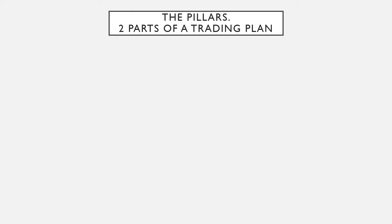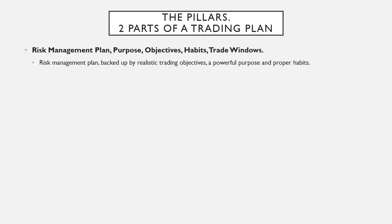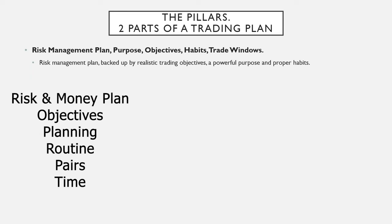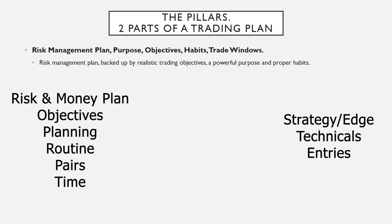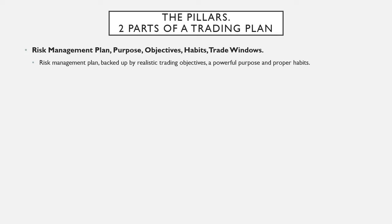So what are the pillars of trading? There are two parts of a trading plan. The first part is your risk management plan — your purpose, objectives, habits, trade windows. This is your business plan: your risk plan, your money plan, your goals, your habits, when you're going to trade, what you're going to trade. Then there is the second part — your edge, your strategy — exactly what you're going to do when you open your charts. A lot of traders first jump into the advanced stuff and skip the foundation, and they keep going in that loop.